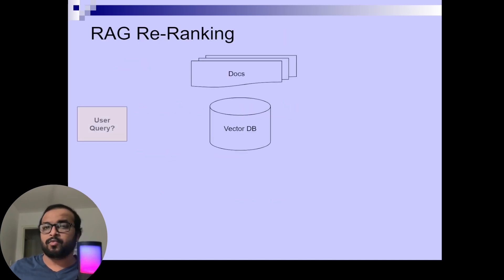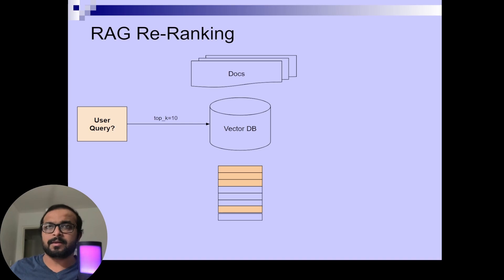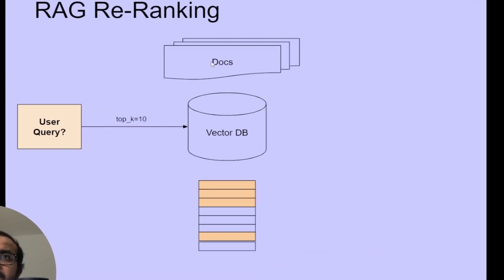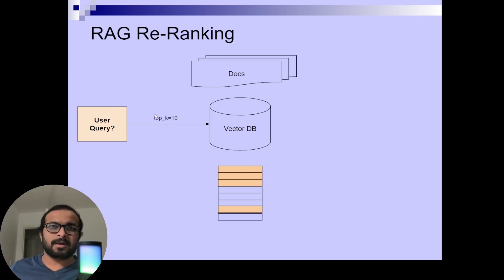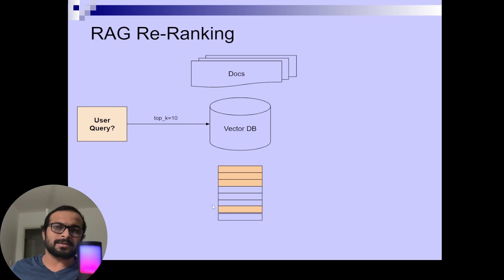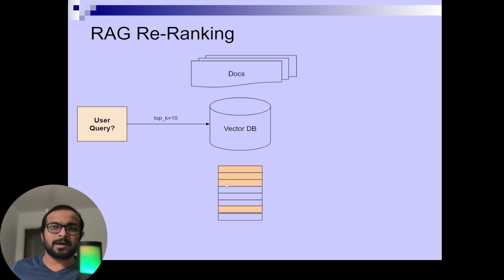Let's take a look at what is happening when we use RAG re-ranking. You have your set of documents already vectorized into the vector database. When a user makes a query in your AI application and you have selected top K equal to 10, that means your RAG pipeline will query the vector database and fetch the top 10 similarity search outputs. It may happen that out of these 10 outputs, maybe only four are actually relevant to the user query and the rest are not actually relevant.